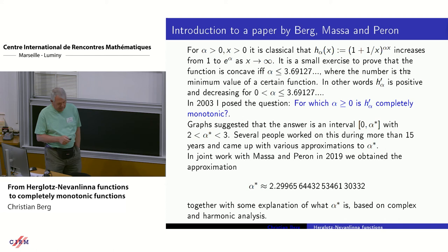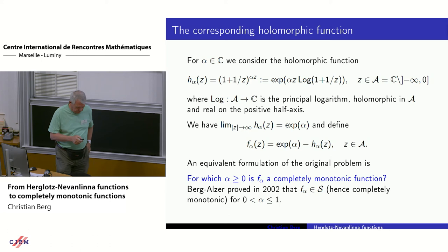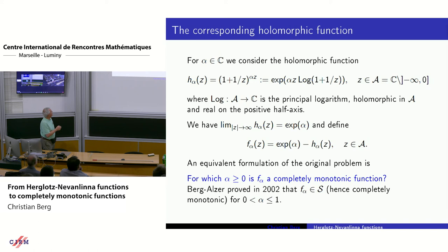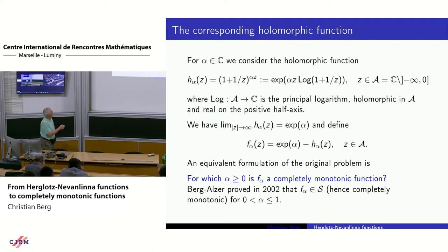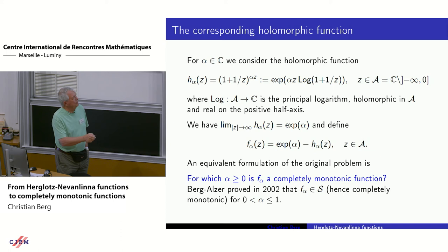Finally in the work by Massa, Peron and myself, we characterized alpha* and could calculate it with as many decimals as we wanted — we thought 20 was enough. The result is based on harmonic analysis and complex analysis. For any complex number alpha, we consider the function of a complex variable (1 + 1/z)^{alpha·z}, defined using the principal logarithm in the cut plane. For complex values, when |z| tends to infinity, the function h_alpha approaches the exponential of alpha. The question is: for which non-negative alpha is this function completely monotonic?